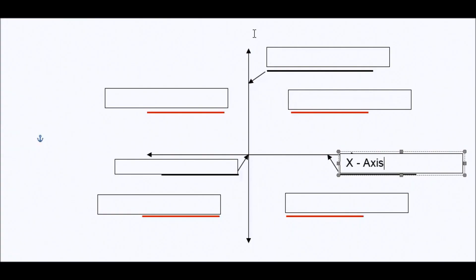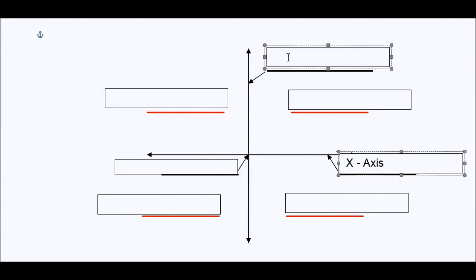We also have another dimension, another number line — a vertical number line going north and south, or up and down. That one we call the y-axis.